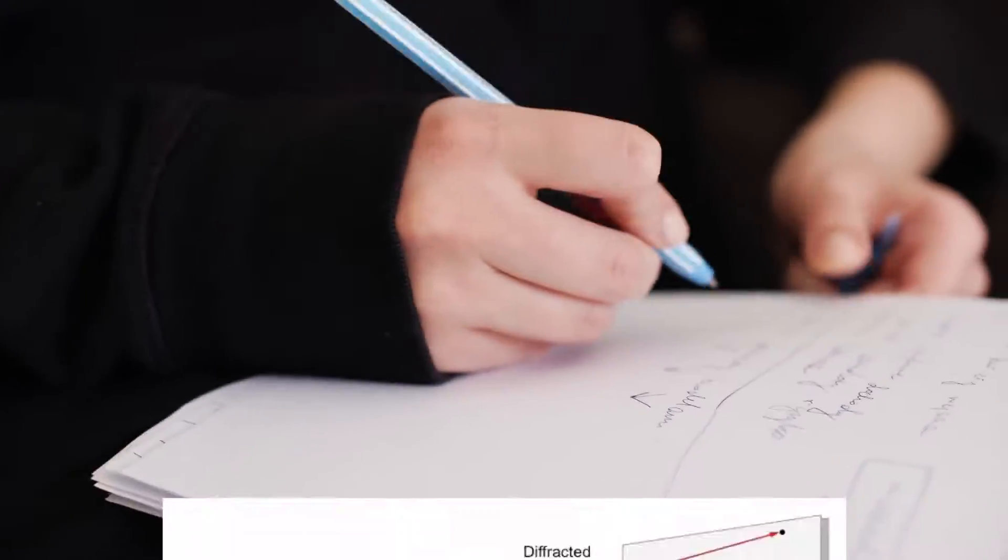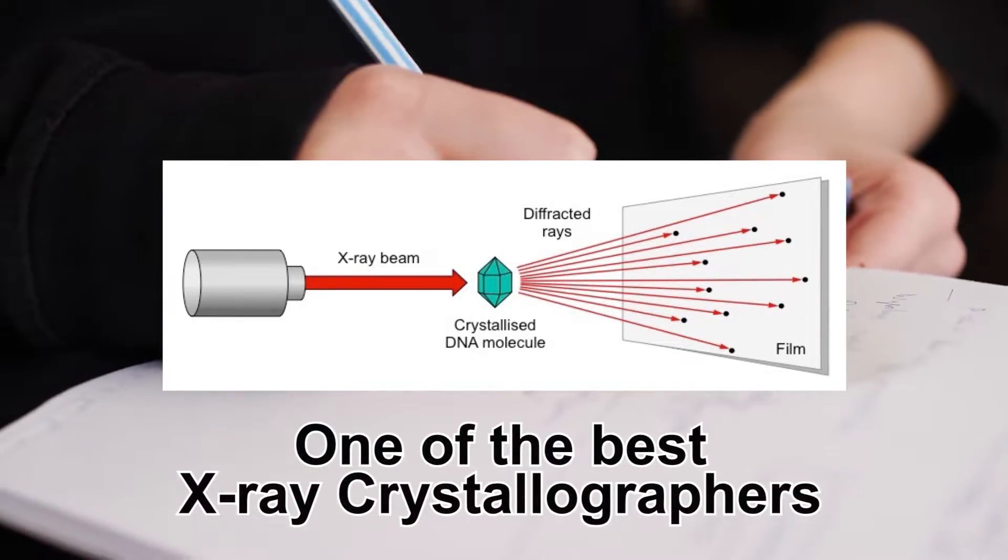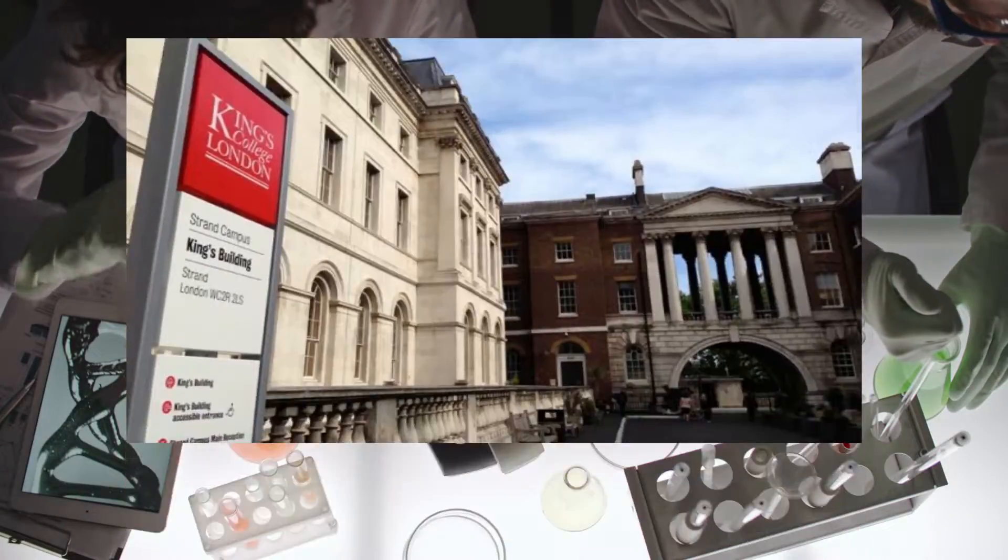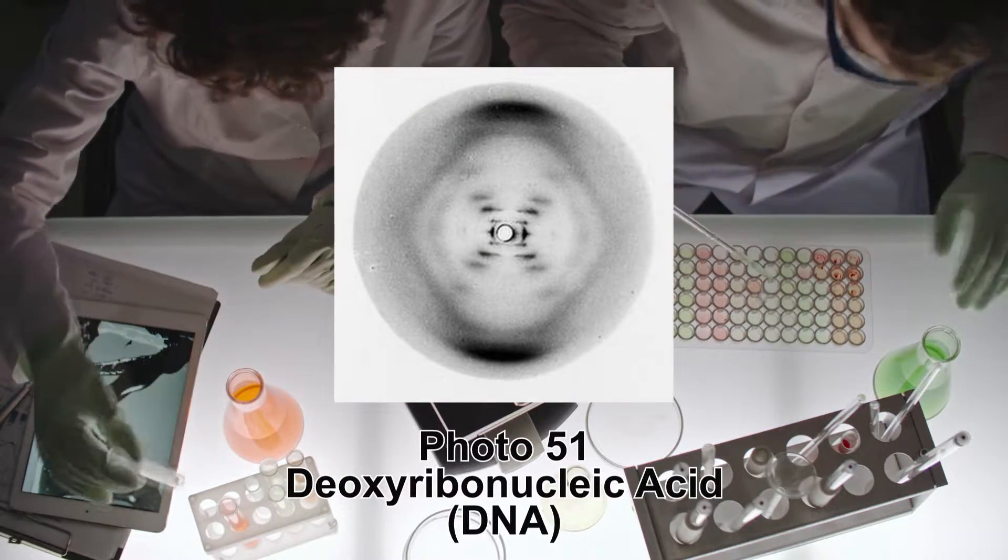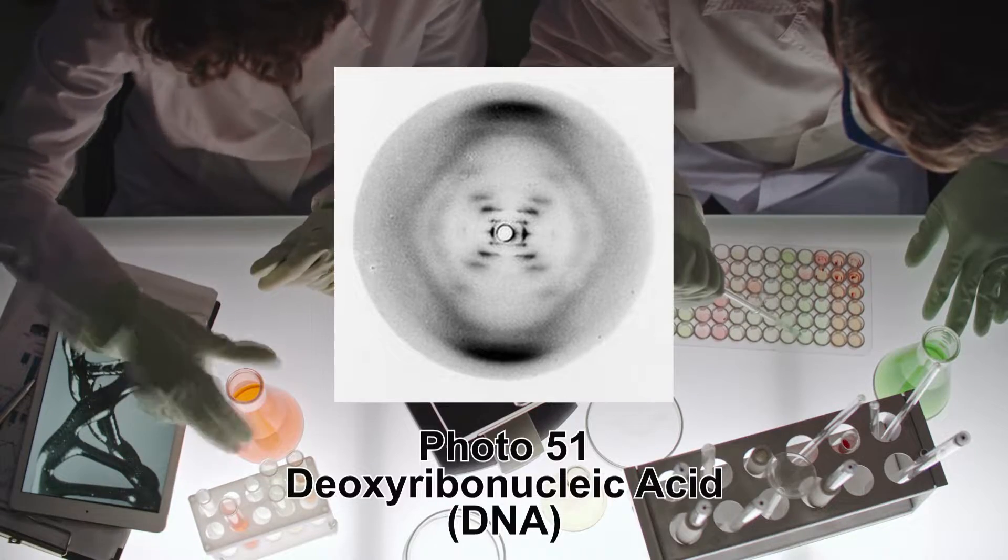Franklin worked diligently and became one of the world's best X-ray crystallographers, and on May 6, 1952 at King's College London, she photographed her 51st X-ray diffraction pattern of deoxyribonucleic acid or DNA.